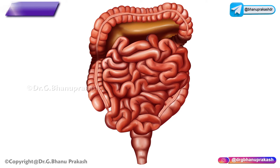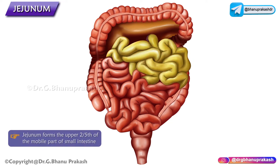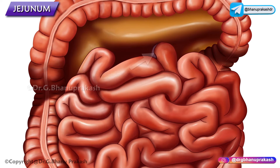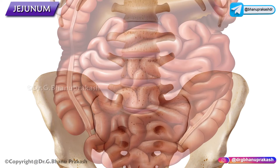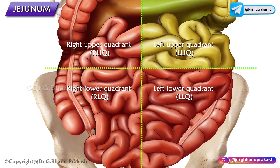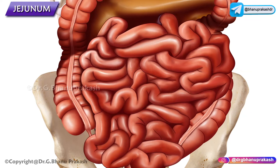The jejunum forms the second part of the small intestine and makes up the upper two-fifths of the mobile part of the small intestine. It begins at the duodenojejunal flexure, where the gastrointestinal tract resumes an intraperitoneal course. Most of the jejunum lies in the left upper quadrant of the infracolic compartment.